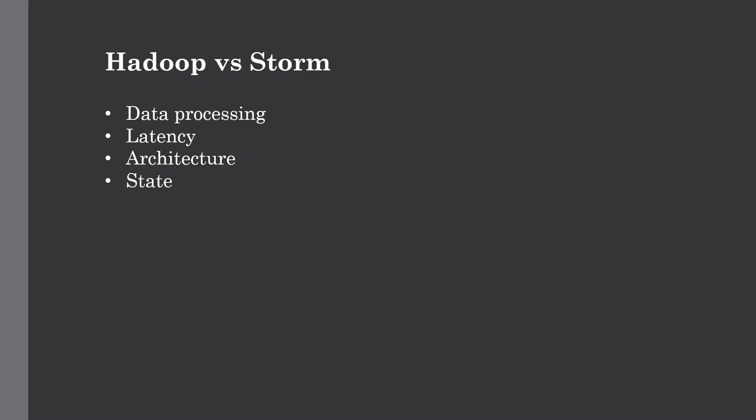The next difference is architecture. Hadoop's architecture consists of HDFS for data storage and MapReduce for data processing. In Storm, it consists of spouts and bolts — what those are we will see in the next topic. Regarding state: Hadoop is stateful in nature, so if the data stream stops the latest state needs to be saved somewhere. But Storm is stateless and very simple to implement. These are some major differences between Hadoop and Storm.